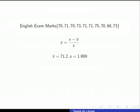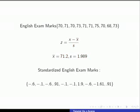The mean of our sample is 71.2 and the standard deviation is 1.989. We calculate the z-scores by subtracting 71.2 and dividing by 1.989, which gives us the standardized values.